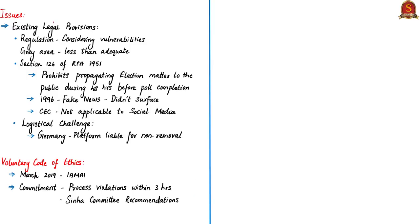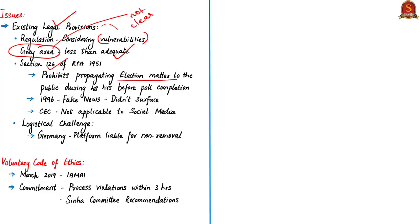The existing legal provisions for regulating social media platforms considering their vulnerabilities in spreading fake news are less than adequate. We have Section 126 of the Representation of the People Act 1951, which prohibits propagating election matters through musical concerts, theatrical performances, or public meetings during the prohibitory period of 48 hours before completion of poll. This section was enacted in 1996, when the problem of fake news had not surfaced. Moreover, the chief election commissioner stated that Section 126 is not applicable to print media or social media.